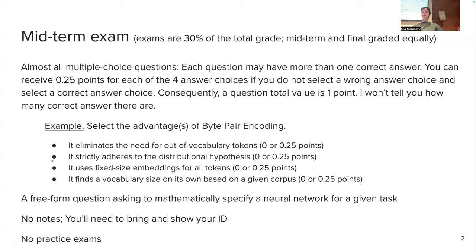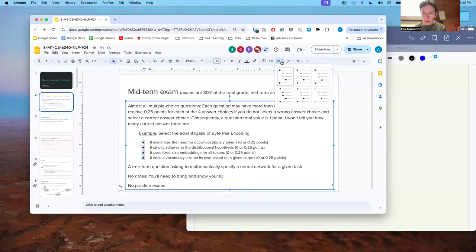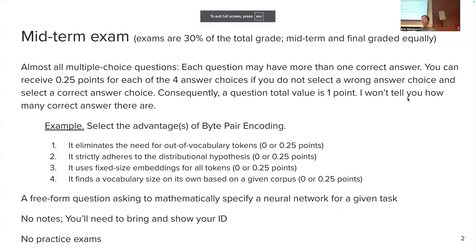A tricky part is that there will be multiple possible correct answers, and I won't tell you how many there are. The way I'm going to grade the questions: if there are four options offered, each one of them can bring you one-quarter of a point. The entire question gives you one point, and there are four options, therefore one-quarter each. I'm checking binary — whether you selected or did not select each choice, depending on what was the right decision. Let me go over an example.